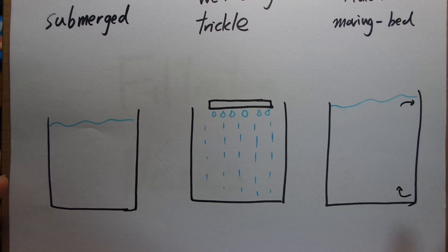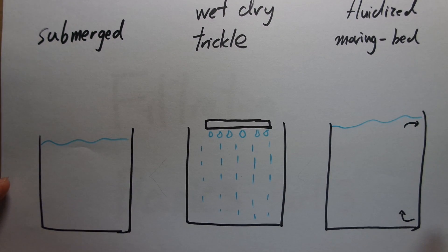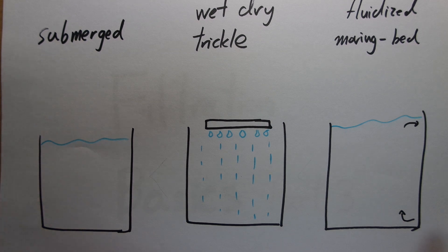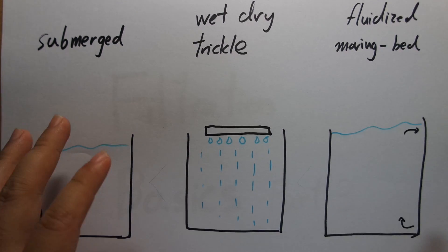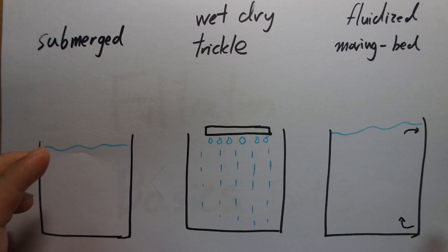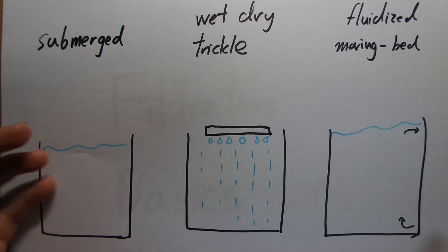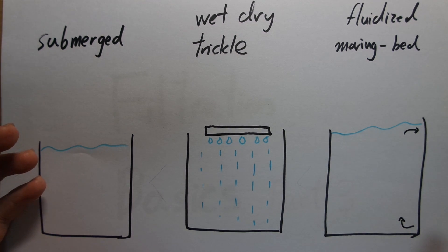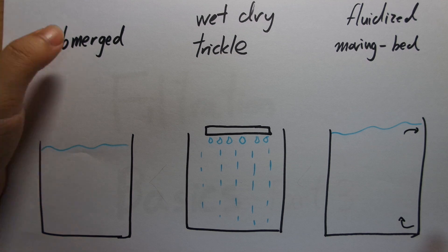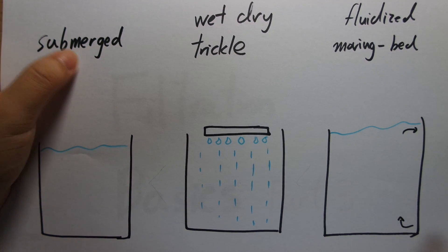There are three different types of filtration in terms of how the media is laid out. I'm going to divide the classification like this because there are basically only three ways you can have your media set up, and the most common way is to have it submerged.